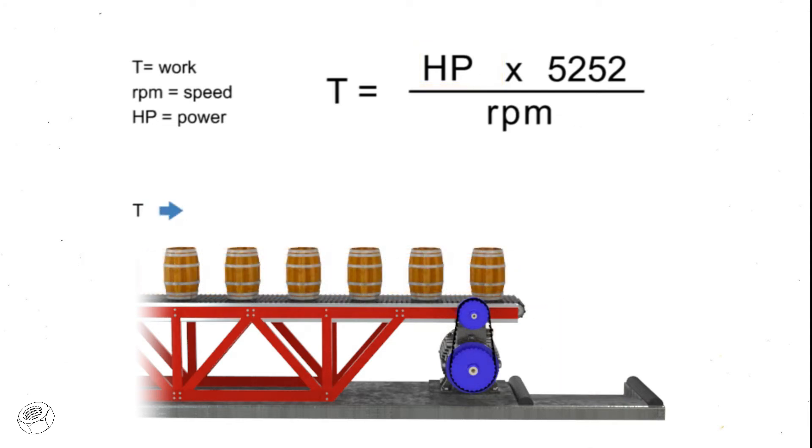Let's say we wish to keep torque constant, but want to increase the production of barrels. If the torque, or number of barrels, on the conveyor belt remains constant, but speed increases, then the horsepower of the motor also increases.